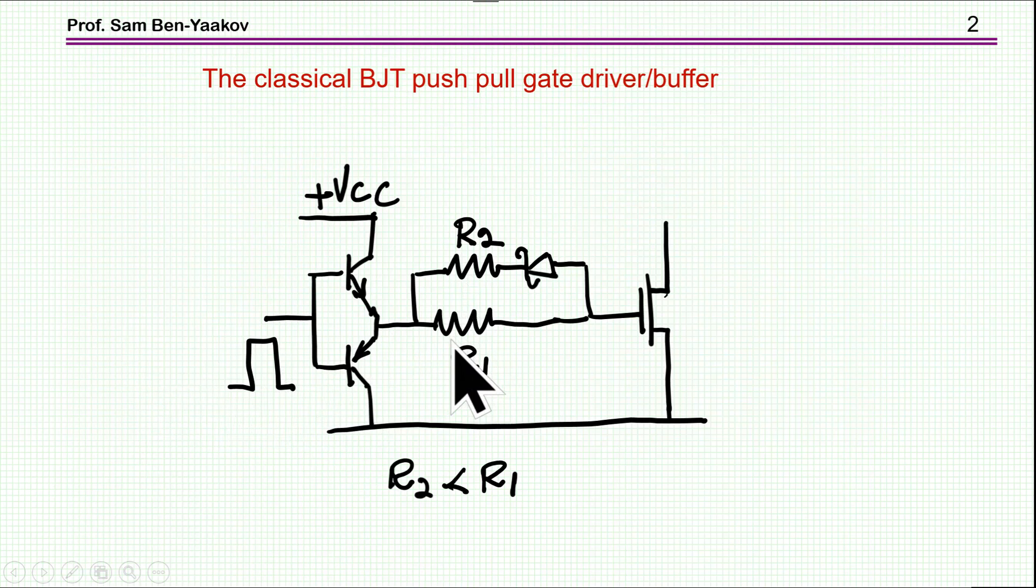And then we have two resistors, one for turn on and one for turn off. Usually, we'd like to have the turn off to be faster, so R2 is going to be smaller than R1. We have then a Schottky diode here to separate between these two paths.